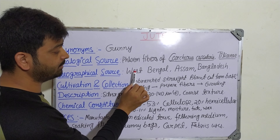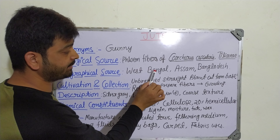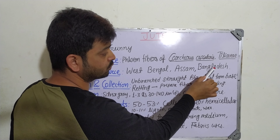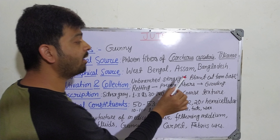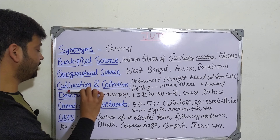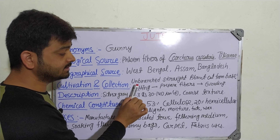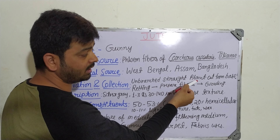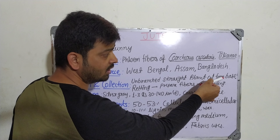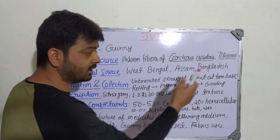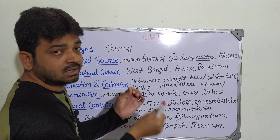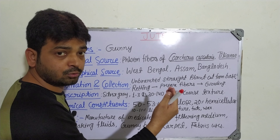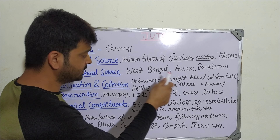Geographical source: it is available in India, specifically West Bengal and Assam. Apart from India, it is also cultivated in Bangladesh. Coming to cultivation and collection, it is an unbranched straight plant which has to be cut from the base and the outermost parts are removed to obtain the fibers.